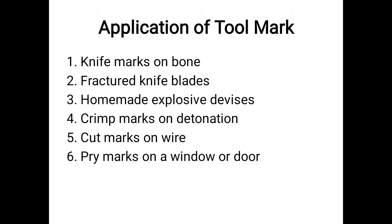How can we have a tool mark in our investigation? The first one is knife marks on bones, such as when a victim is stabbed. Another is fractured knife blades, homemade explosive devices, and crimp marks on detonation — where movement of wires on a bomb indicates a tool was used to detonate it. There are also cut marks on wires and pry marks on a window or door, especially if there is a possible forceful entry into the vicinity or building.